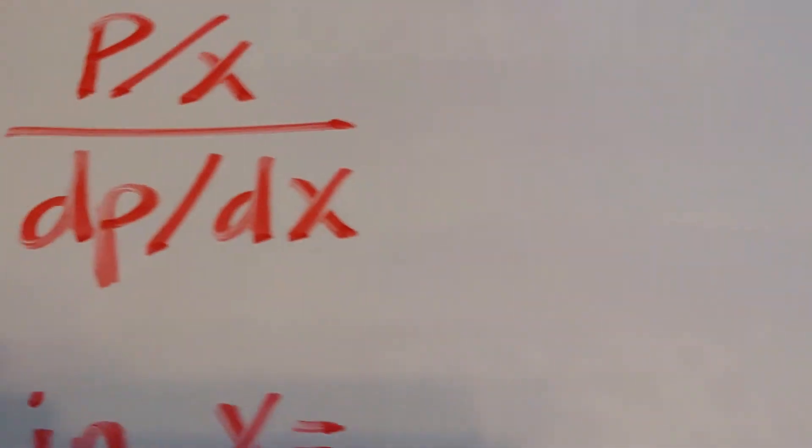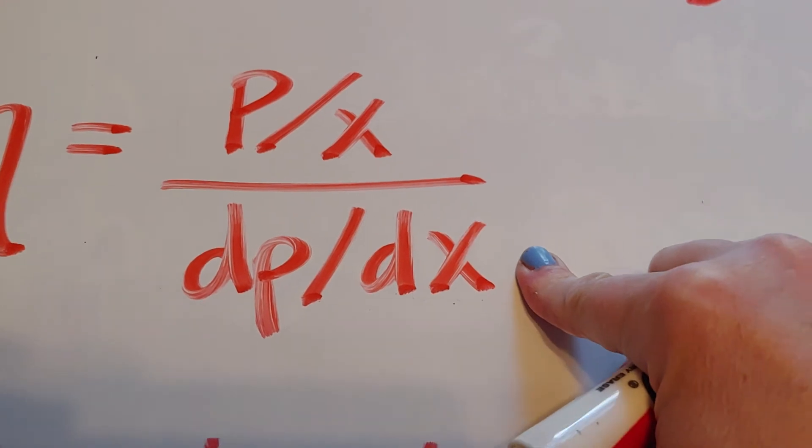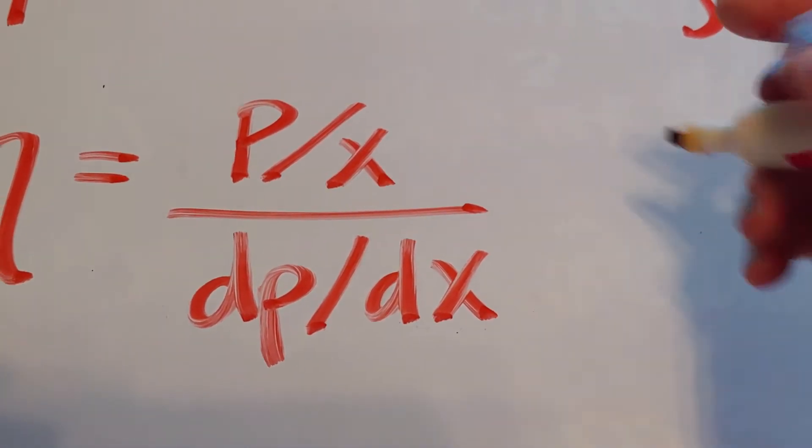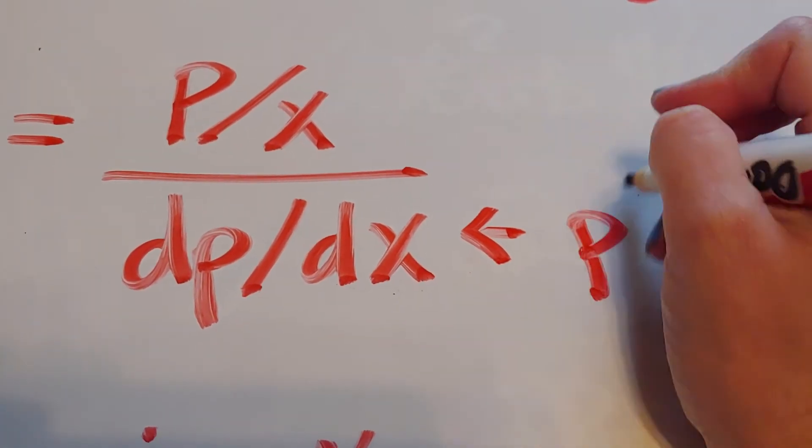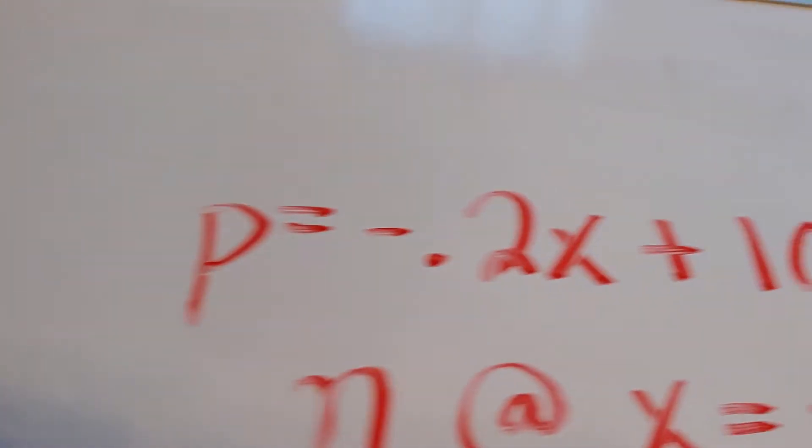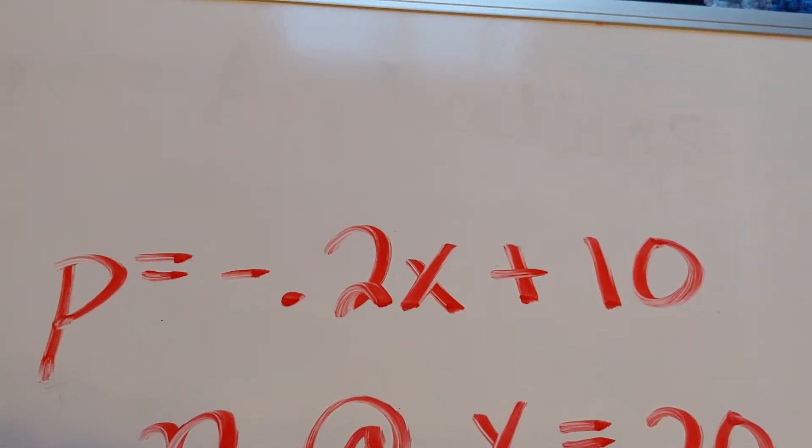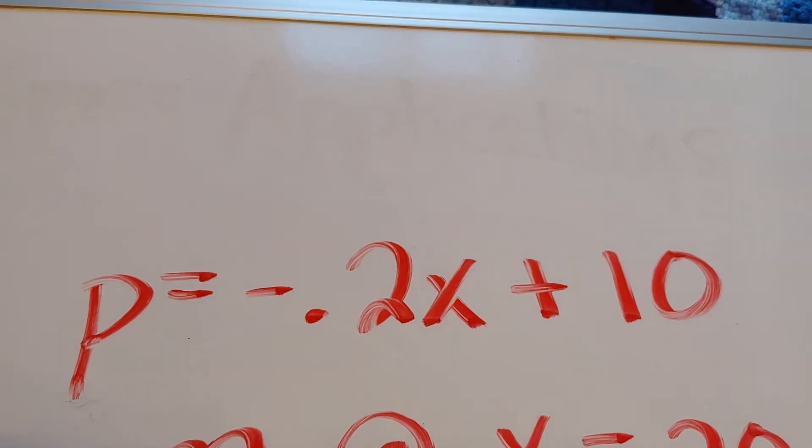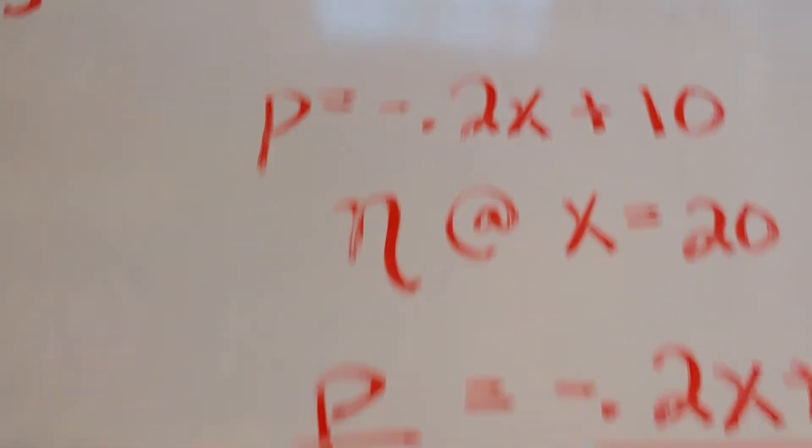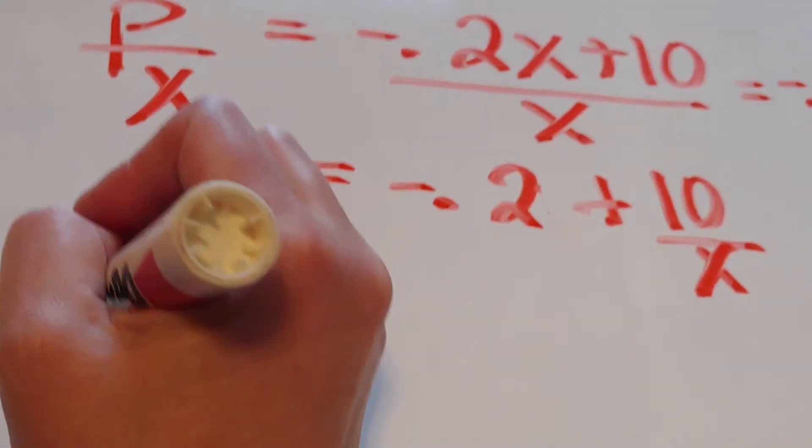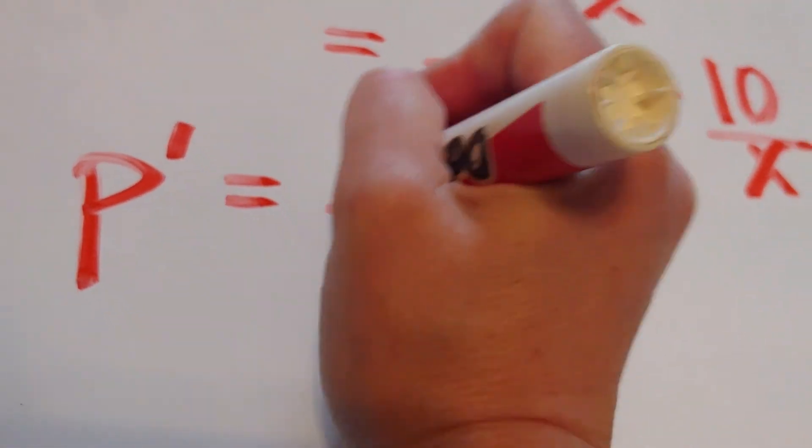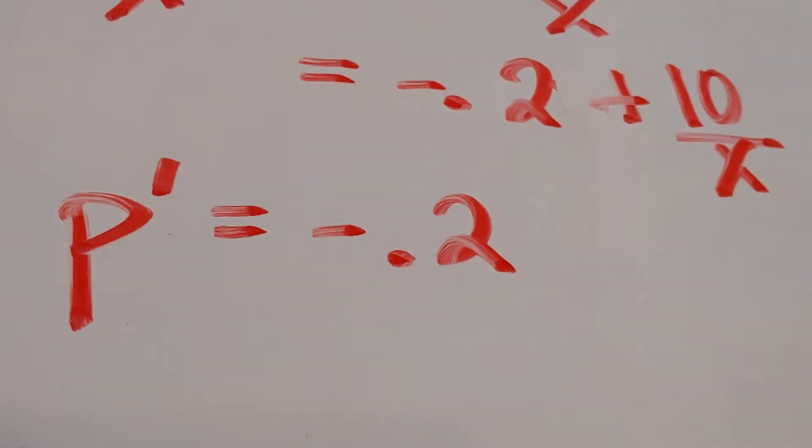The second piece of the puzzle is this bottom is saying find the derivative of p with respect to x. So this is p prime. So if I go to this function and I ask myself, what's p prime? p prime is just negative 0.2. So I'm going to write that. p prime is negative 0.2.